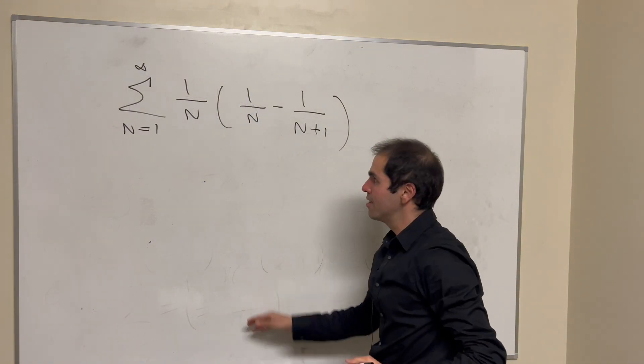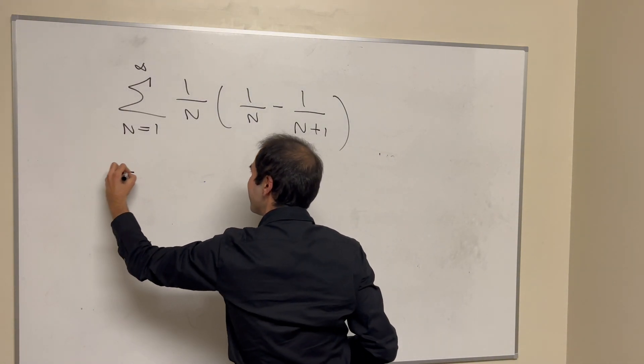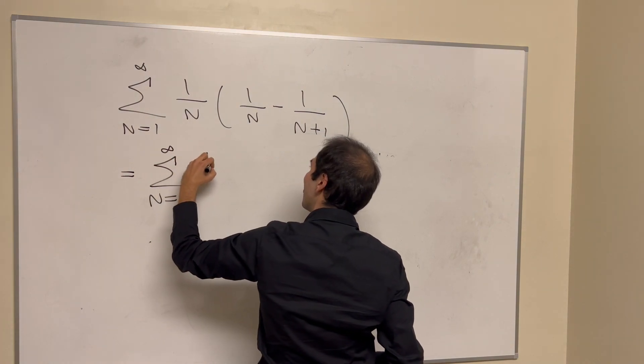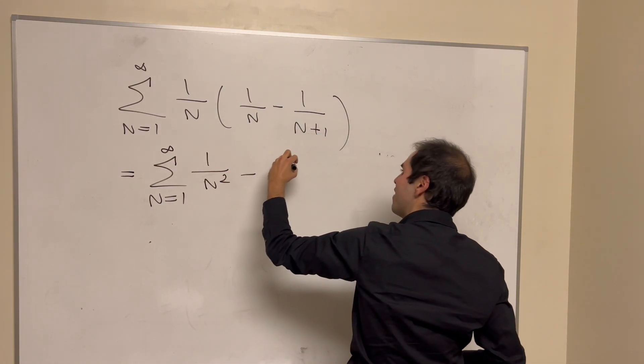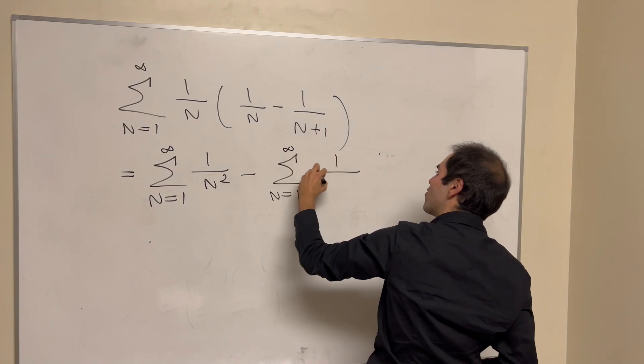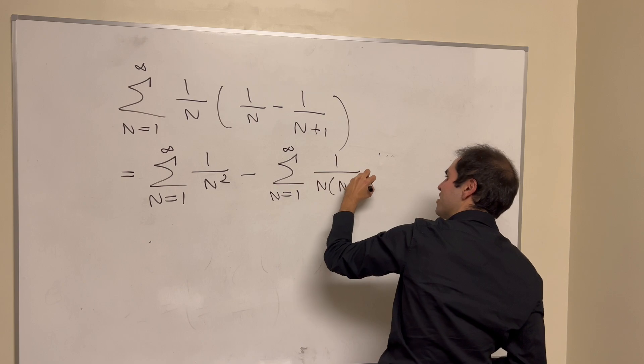So let's split this now up. So what this is equal to, it's equal to sum from 1 to infinity of 1 over n squared minus sum from 1 to infinity of 1 over n times n plus 1.